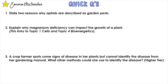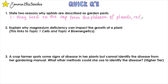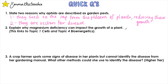Let's test what you've learnt. Question 1: State two reasons why aphids are described as garden pests. Firstly, they feed on the sap from the phloem of plants, which reduces their growth. And secondly, they are vectors of disease, which means they can carry pathogens.